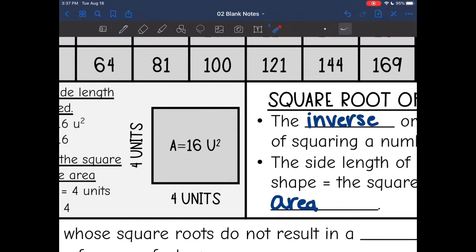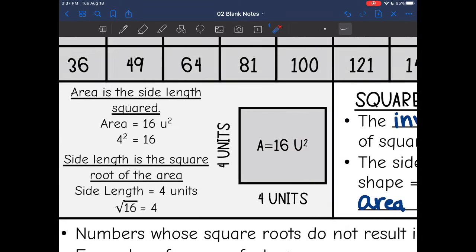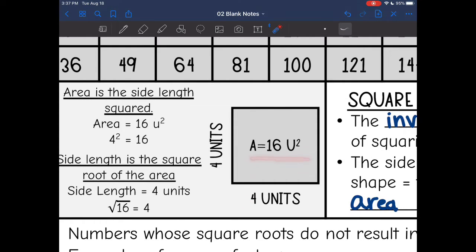My area here was 16. My side length was 4. So that means the square root of 16 is 4. So square root is just figuring out what two numbers that are the same did I multiply to get the square number.